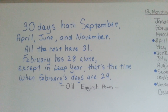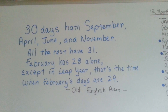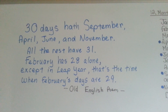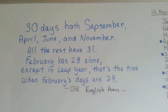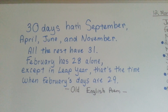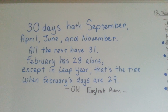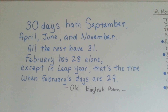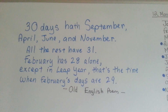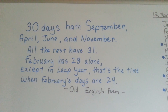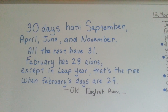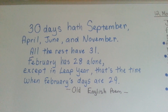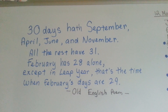I have an old English poem for you. Thirty days hath September, April, June, and November. All the rest have 31. February has 28 alone, except in leap year — that's the time when February's days are 29.